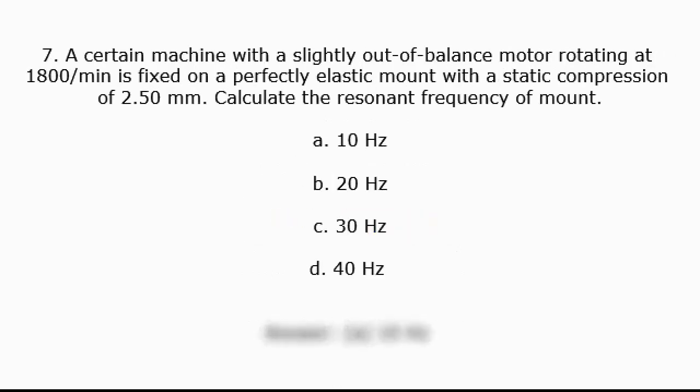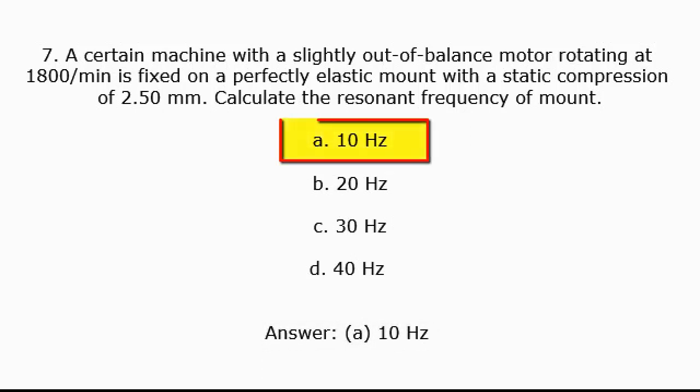Question 7: A certain machine with a slightly out-of-balance motor rotating at 1800 rpm is fixed on a perfectly elastic mount with a static compression of 2.50 millimeters. Calculate the resonant frequency of the mount. A. 10 Hz, B. 20 Hz, C. 30 Hz, D. 40 Hz. Answer: A. 10 Hz.